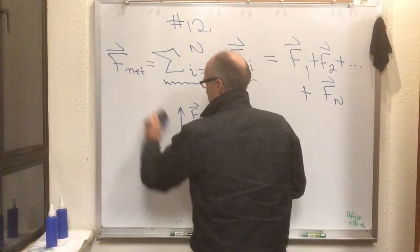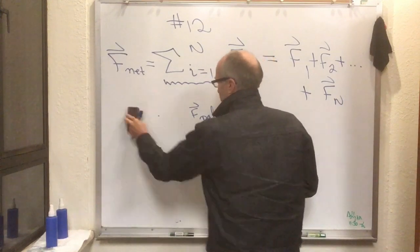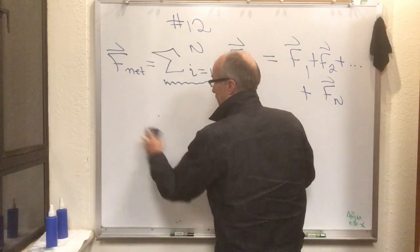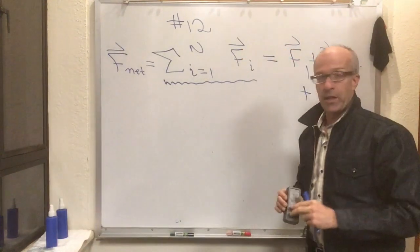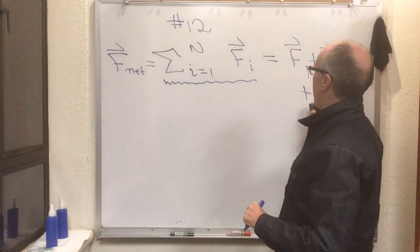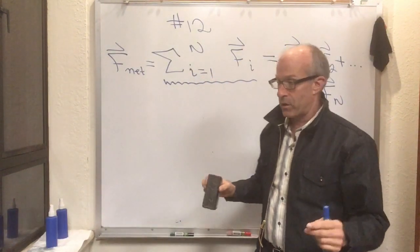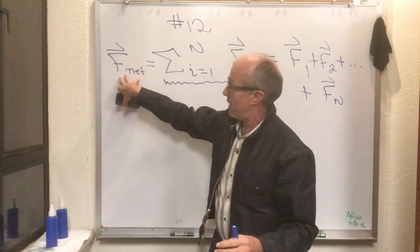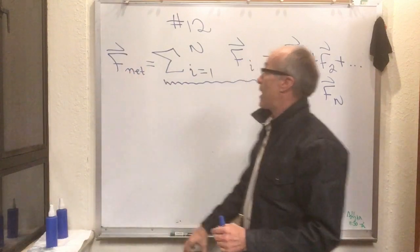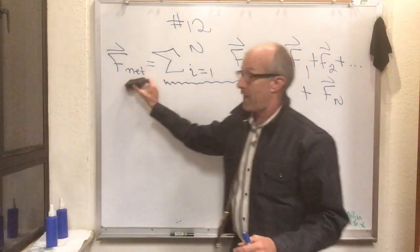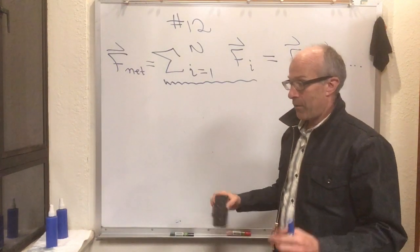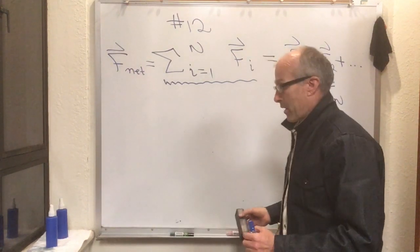And the really critical thing here from a physics standpoint is that all a particle cares about as far as its ultimate trajectory is what the total vectorial sum of all the forces are on it. It doesn't matter whether there's three forces that made F net or 15 forces that comprise together to make F net. You do the sum, you get the F net, and that is everything you need to know about the forces on that particle to determine what's going to happen to it.